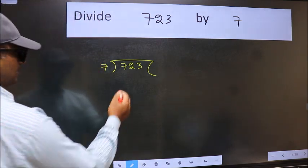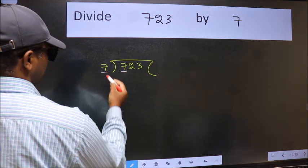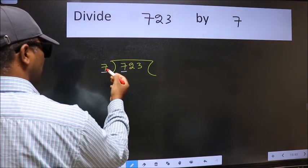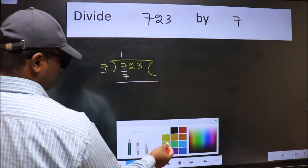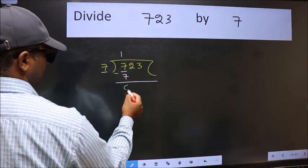Next. Here we have 7 and here 7. When do we get 7 in the 7 table? 7 times 1 is 7. Now we should subtract. We get 0.